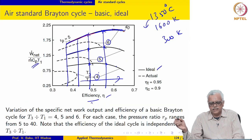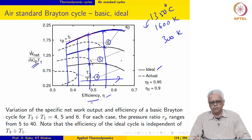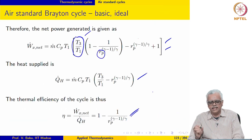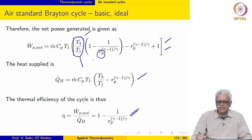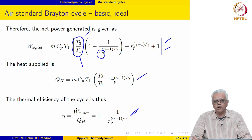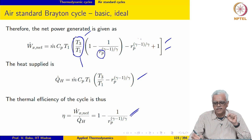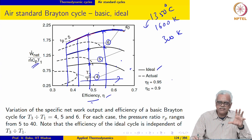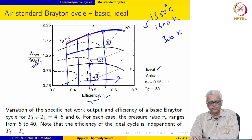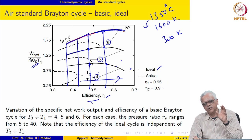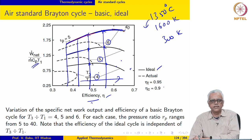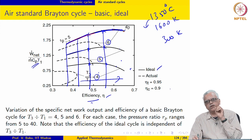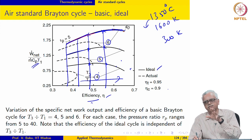These insights are possible only within the air standard cycle. This derivation allowed us to identify T3 over T1 and Rp as the parameters that control the performance of the cycle. By looking at these expressions, we are able to understand the effect these parameters have. The effect of pressure ratio is generally to increase the efficiency. The effect of pressure ratio on the specific work is to increase it initially, but beyond a certain value depending on T3 over T1, the specific output begins to decrease.